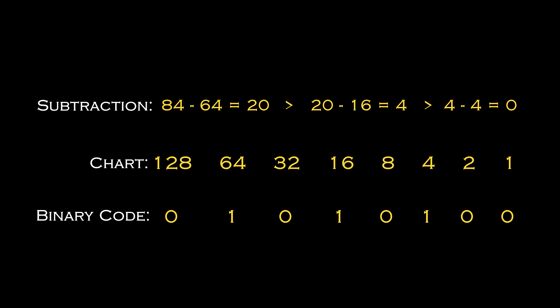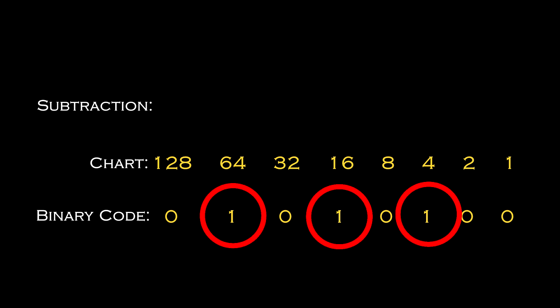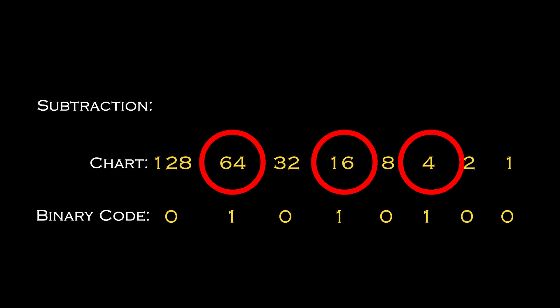If you start off with the 8-digit binary code and you want to translate it back into its original decimal number, it's a much easier process. You use the same chart as before, find which numbers have 1s under them, and simply get the sum of those corresponding numbers. That sum will equal the original decimal number. Using our previous example of 84, the corresponding 1s are under 64, 16, and 4 — and 64 plus 16 plus 4 equals 84.